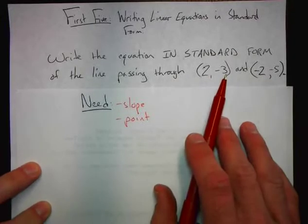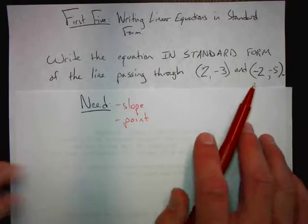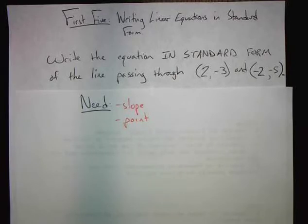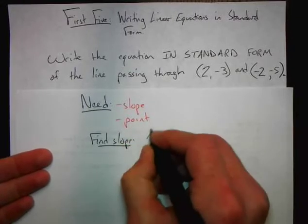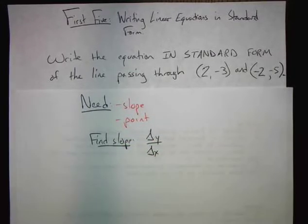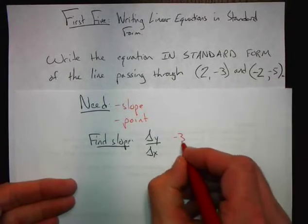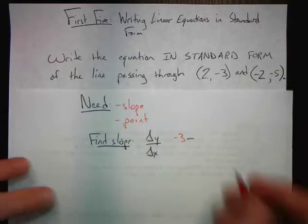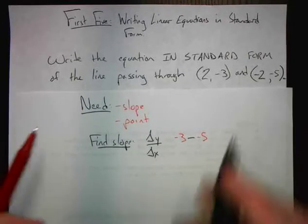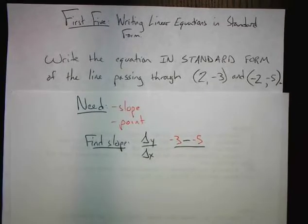We're not given a slope, but just like in the previous video on advanced slope-intercept form, we can find the slope given those two ordered pairs. So the first thing we need to do is find the slope. The way we find slope is through the change in y over the change in x. We take the y-coordinates and subtract them: negative 3 minus negative 5, over the change in x: 2 minus negative 2.